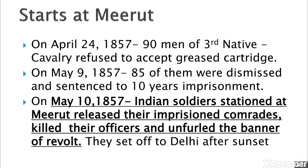The revolt started basically at Meerut. On April 24th, 1857, 90 men of the 3rd Native Cavalry refused to accept the grease cartridges of the Enfield rifle. On May 9th, 1857, 85 out of these 90 were dismissed and sentenced to 10 years of imprisonment. In the early hours of 10th May 1857, the Indian soldiers stationed at Meerut rose in mutiny — they released their imprisoned comrades, killed their officers, and unfurled the banner of revolt.